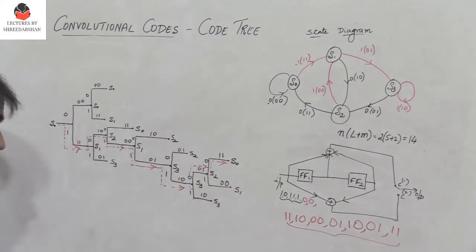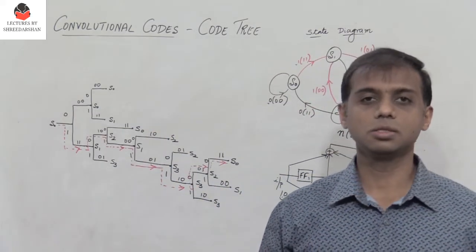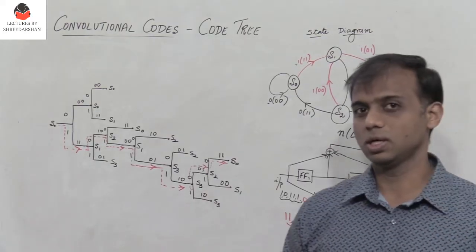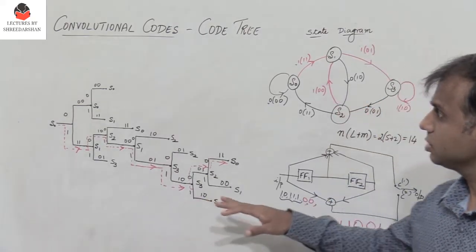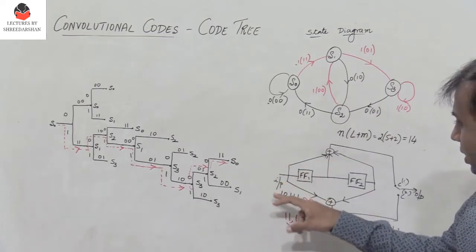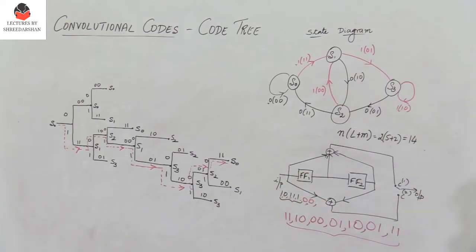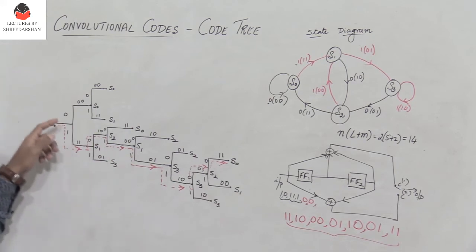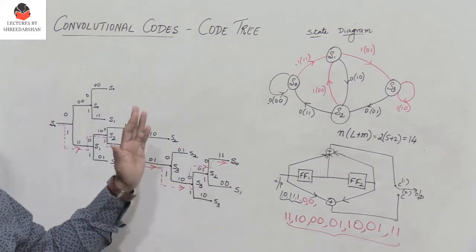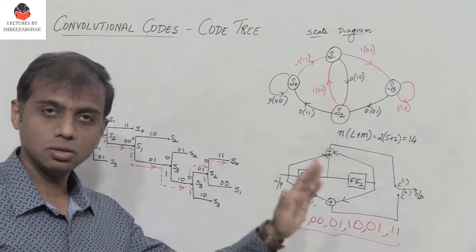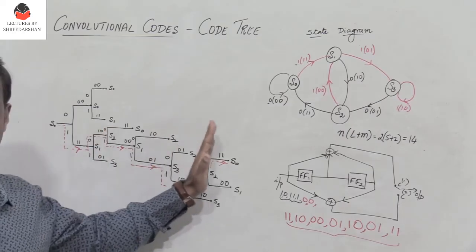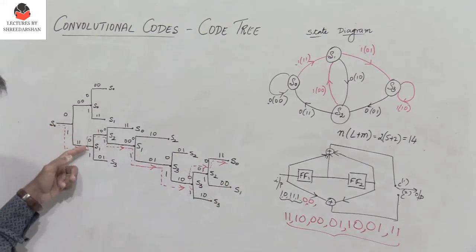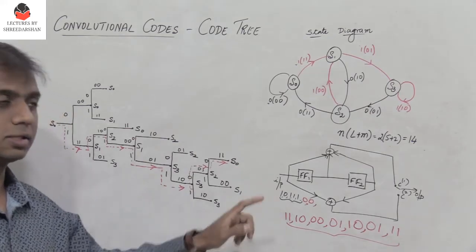You can also verify the result using the transform domain approach, which is very easy. In examinations, you may be asked to verify whether your output is correct. You don't need to draw the complete code tree unless asked — just trace the path corresponding to the given input to obtain the output.